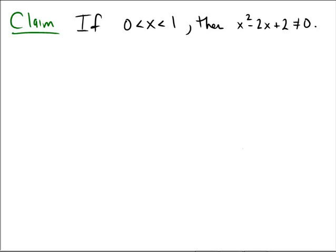If 0 < x < 1, then x² - 2x + 2 ≠ 0. My proof will start as follows.